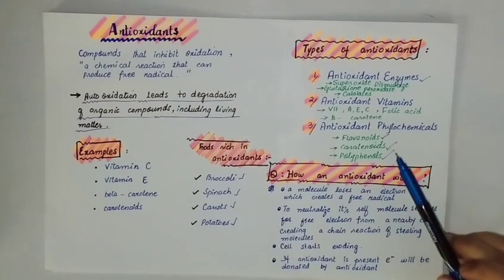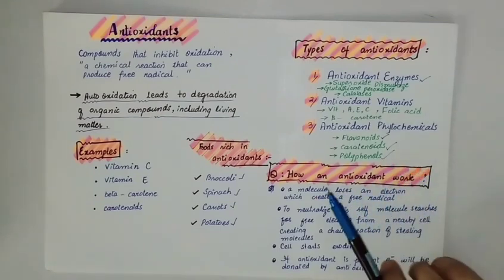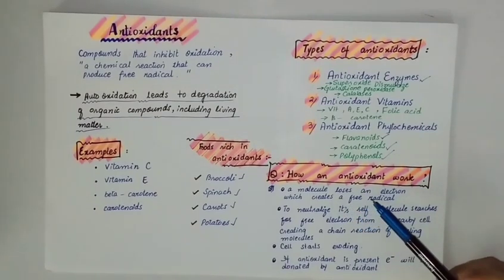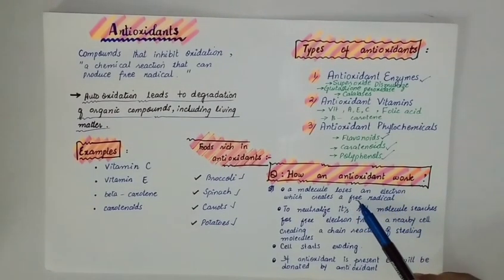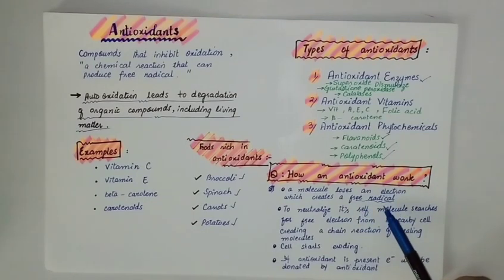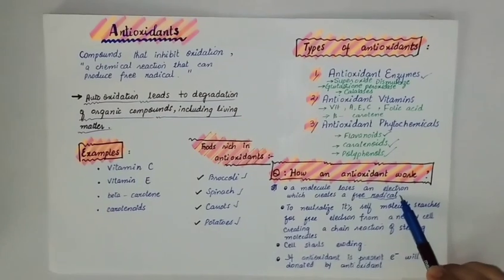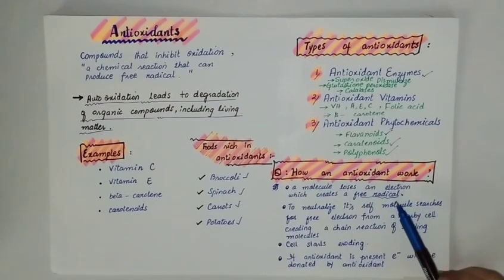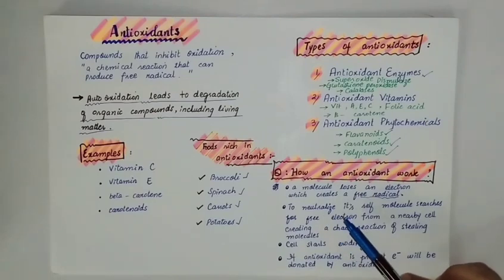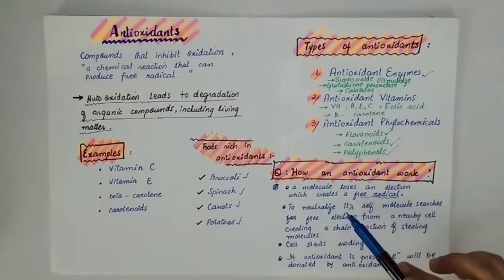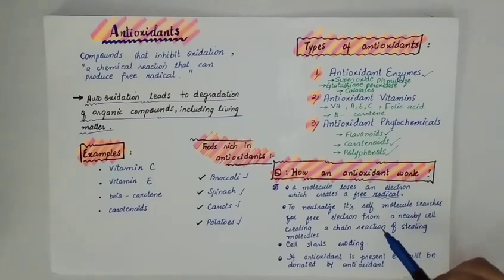Now, how does an antioxidant work? Basically, in our body, when any molecule loses an electron, it creates a free radical. That free radical has a very deteriorating effect. To neutralize itself, the radical borrows an electron from a molecule in your living cells. When that molecule borrows from the next molecule, which borrows from the next, a chain reaction of stealing electrons occurs.